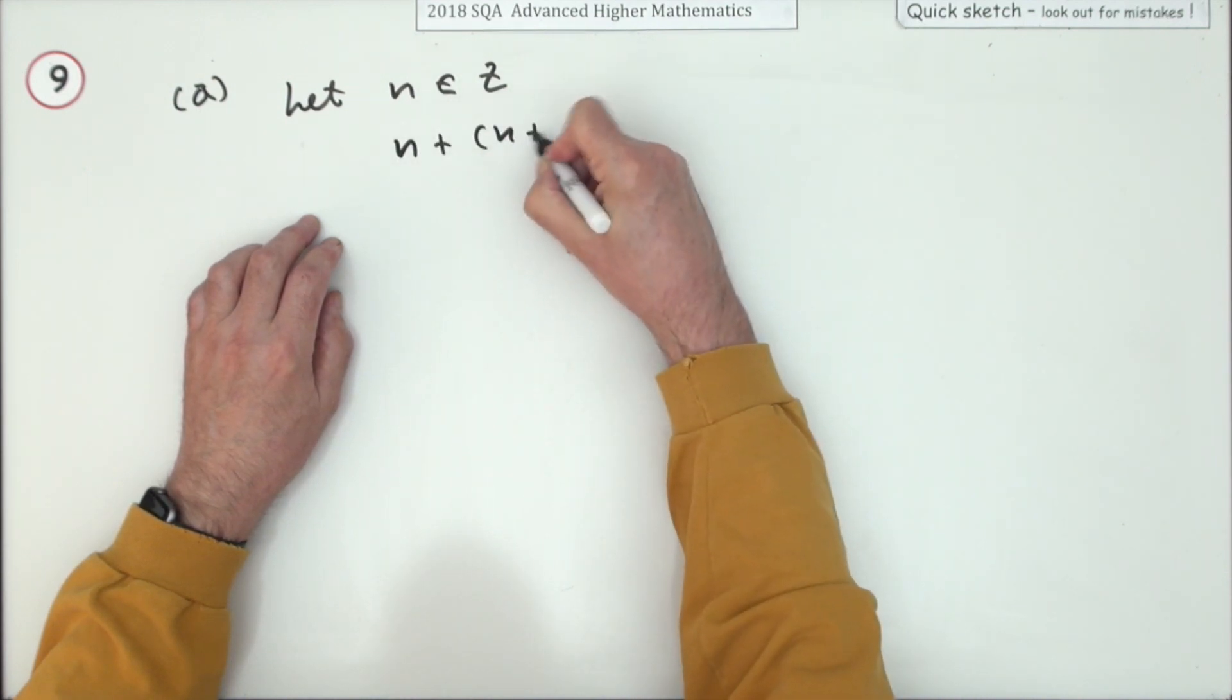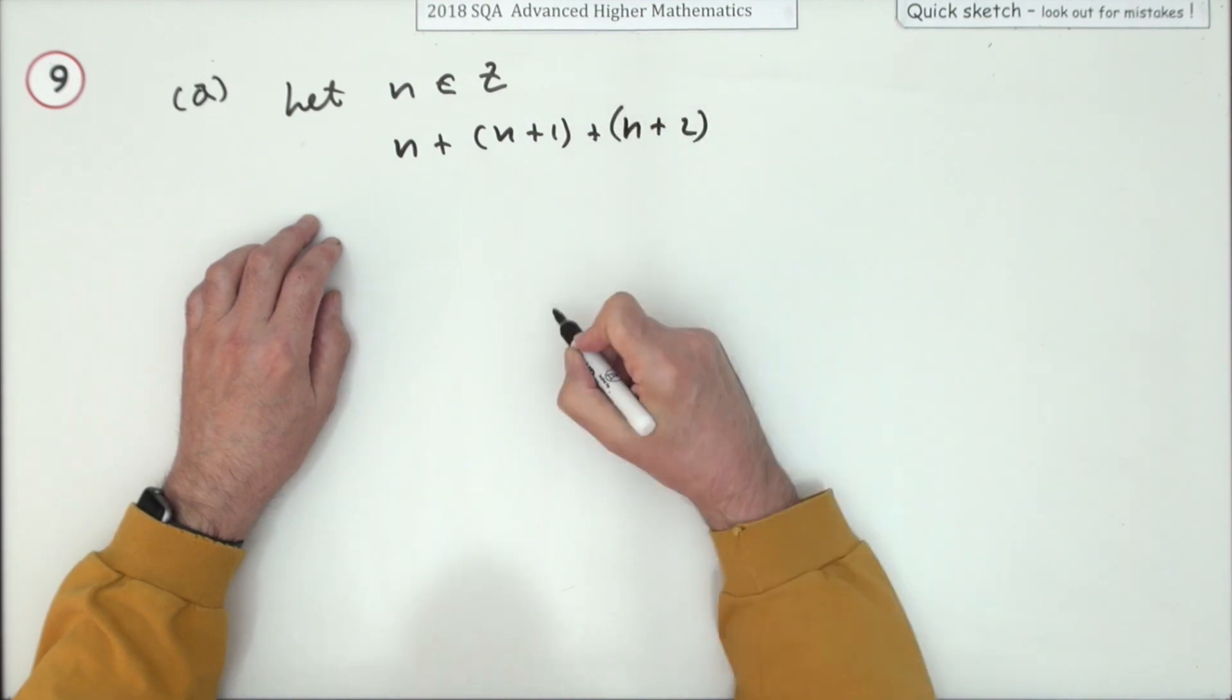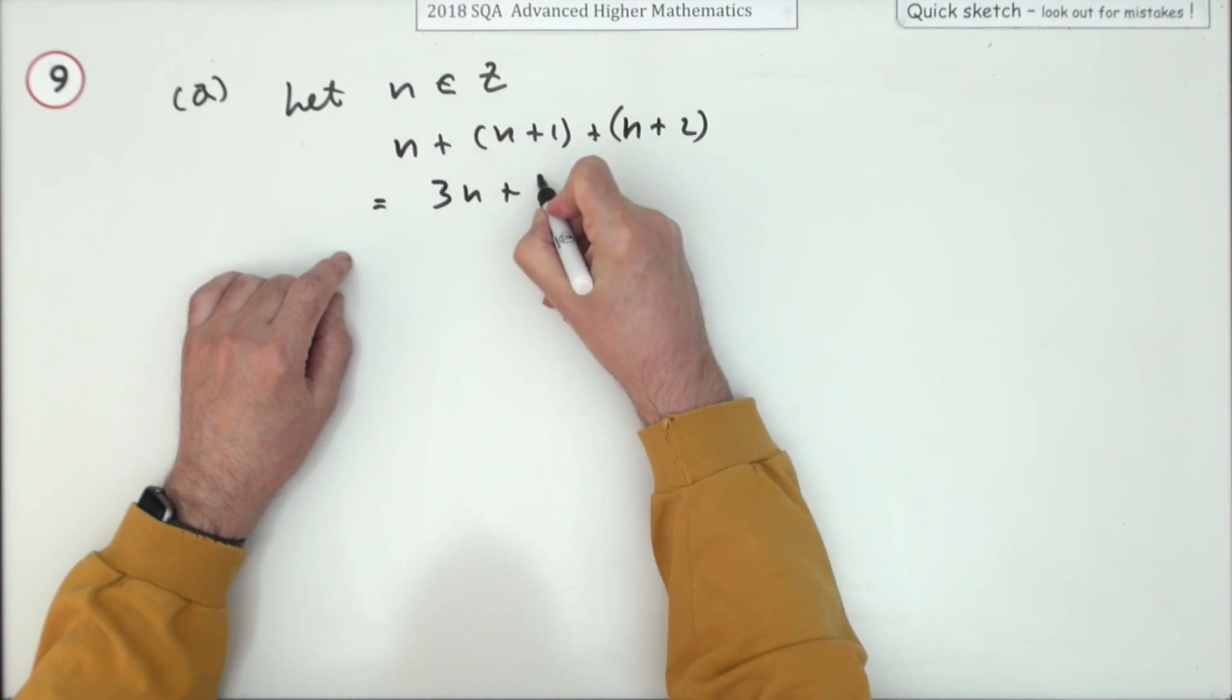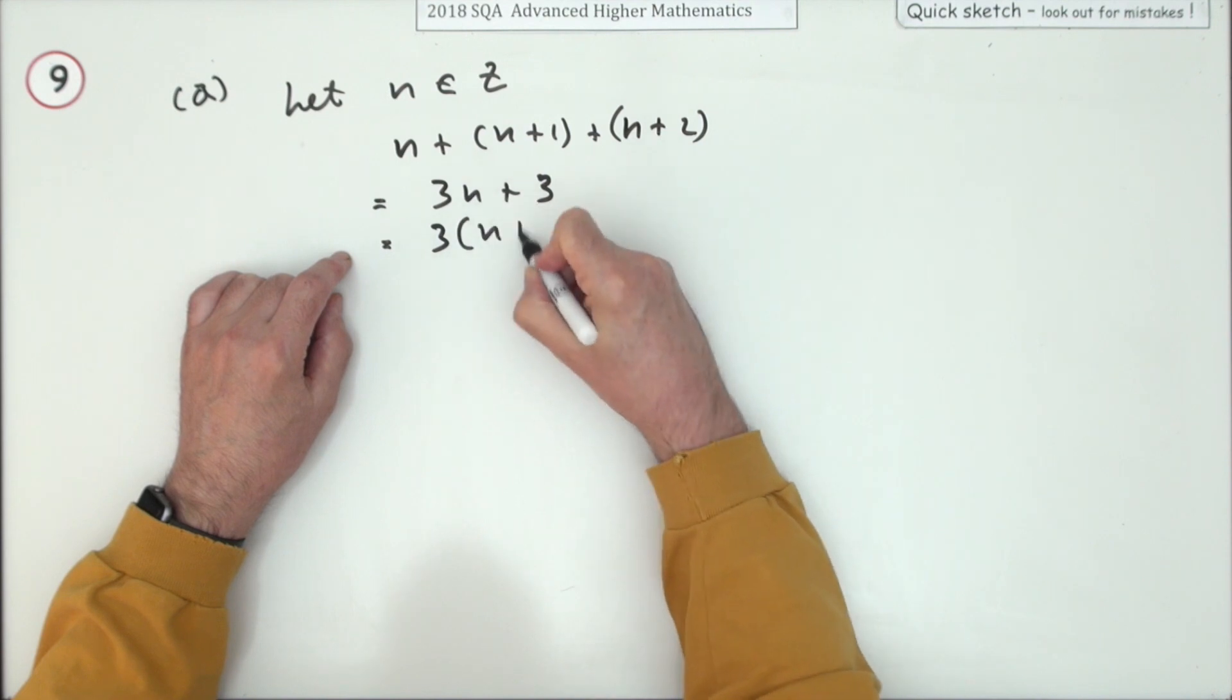Then what you're going to have is n, plus the next number is n plus one, and the next number is n plus two. And that equals three lots of n plus three. Take out that common factor of three, which is three times n plus one.